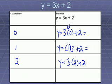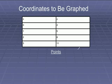So 3 times 0 is 0, 0 plus 2 is 2. 3 times 1 is 3, 3 plus 2 is 5. 3 times 3 is 6, 6 plus 2 is 8. So now to make our points. Our first point is 0, 2. Our second point is 1, 5. Our third point is 2, 8. And I just didn't do this one.